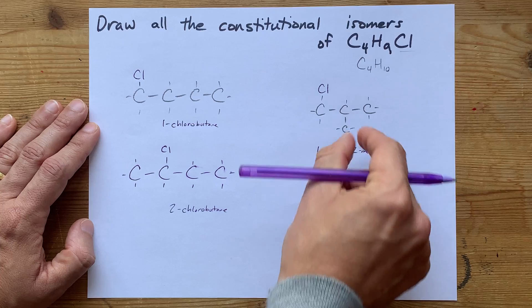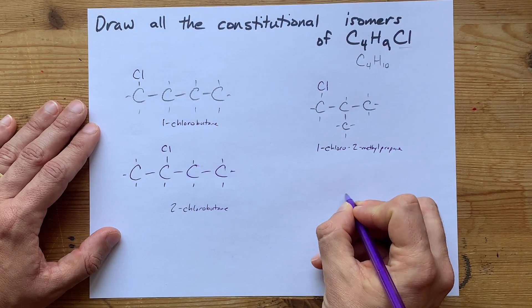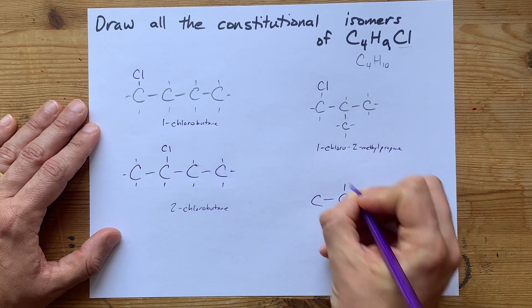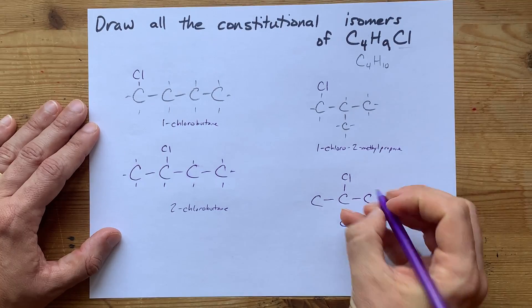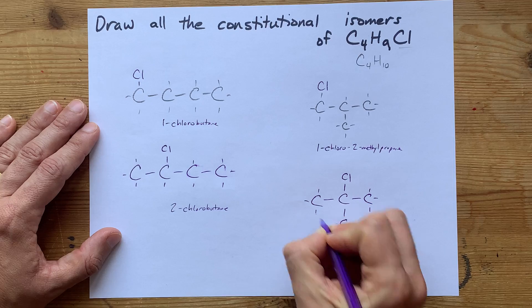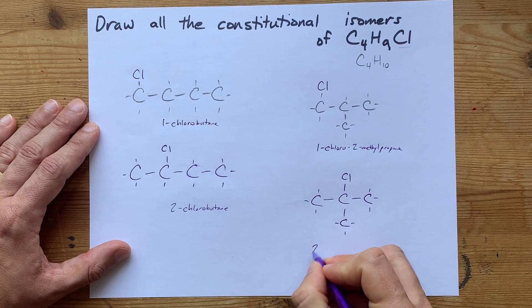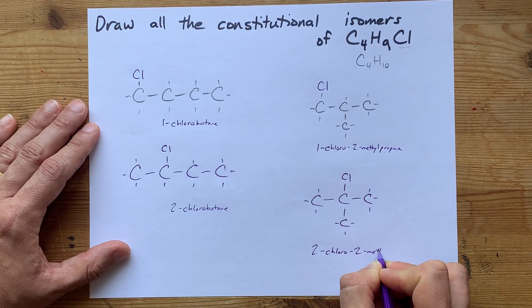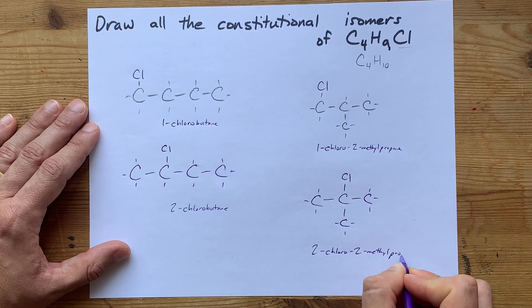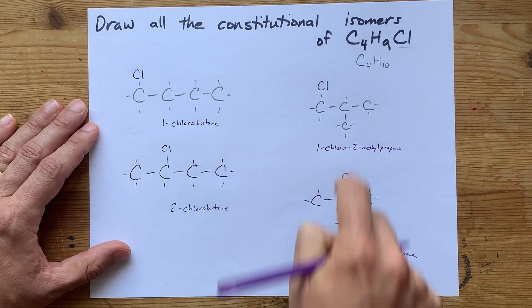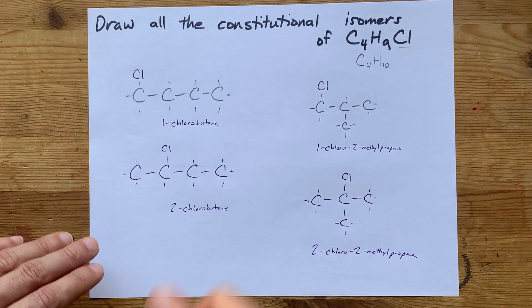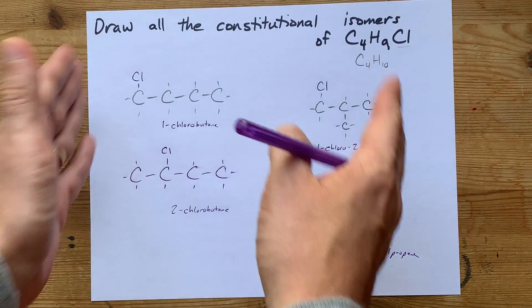But there is one other carbon that I can add it to here, and it's the central carbon of that molecule. If I put it there, then all of a sudden the chlorine's attached to the same carbon that the methyl is. This is 2-chloro-2-methylpropane. And again, you can see if they have different distinct names, then they're distinct constitutional isomers. These are the four. You're done.